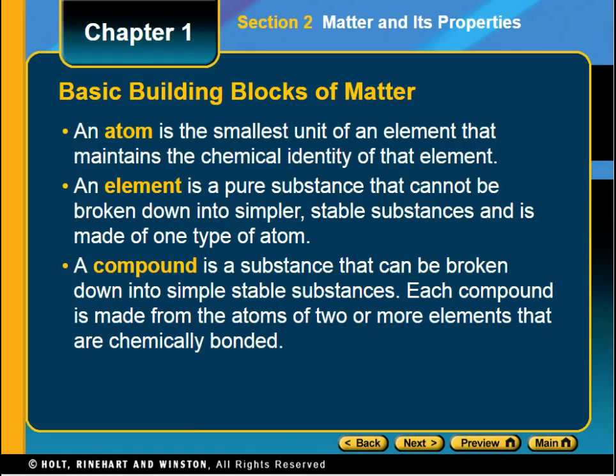If you put multiple elements together, you form a compound. A compound is a substance that can be broken down into simpler or stable substances, and each compound is made up of atoms of two or more elements that are chemically bonded. The key thing here is that you have them chemically bonded.